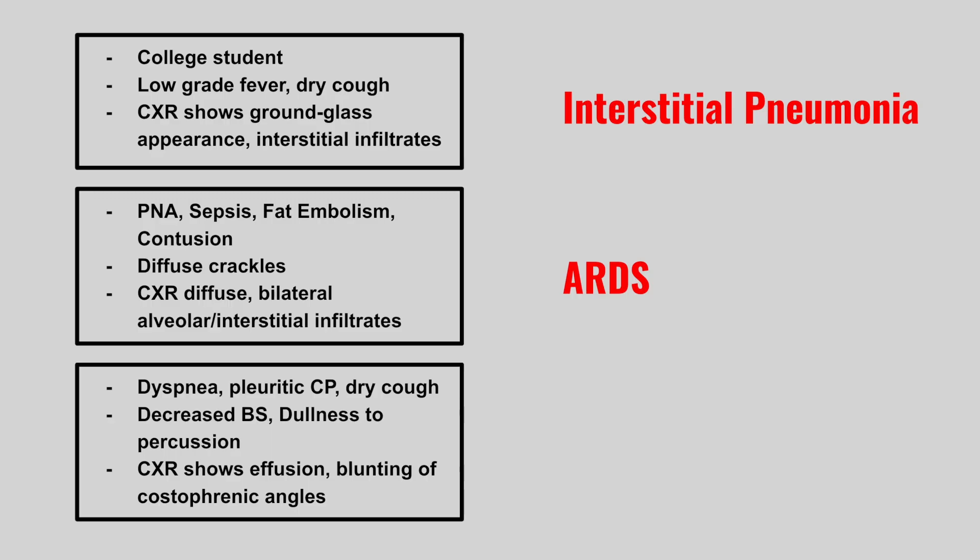Now we have a patient with dyspnea, pleuritic chest pain, and a dry cough. Physical exam shows decreased breath sounds, dullness to percussion, and chest x-ray shows effusion and blunting of the costophrenic angles. This is a pleural effusion.